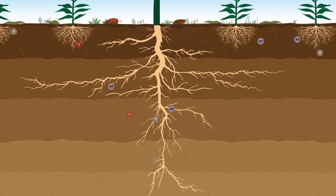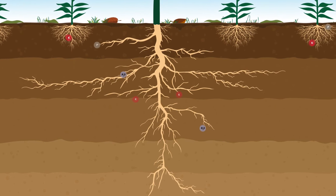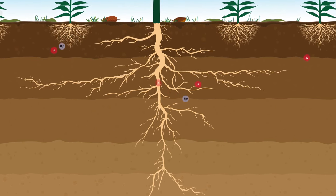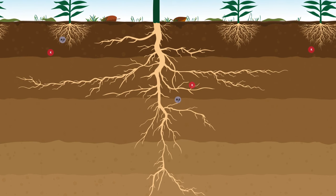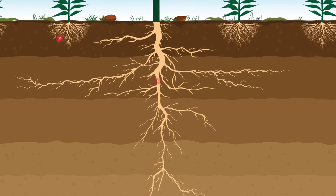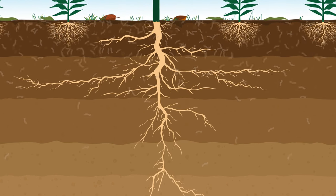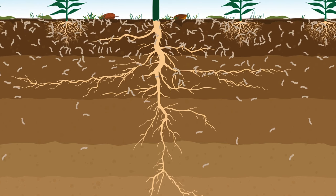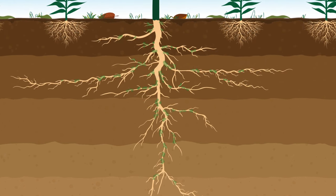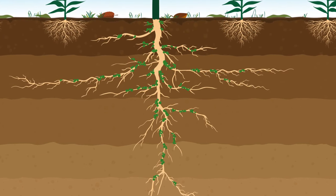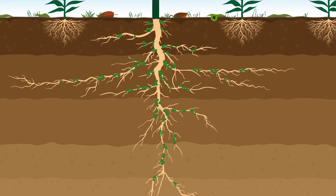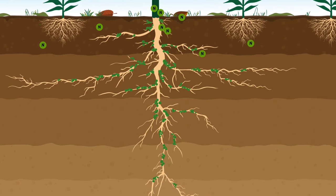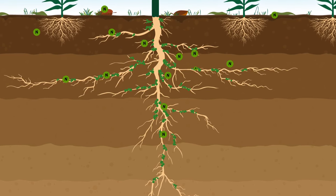Trees can improve microclimate, reduce water and wind erosion, and improve soil fertility by trapping nutrients, building soil organic matter, and stimulating soil life. Furthermore, leguminous trees fix nitrogen that can be used by crops, lowering fertilizer needs.